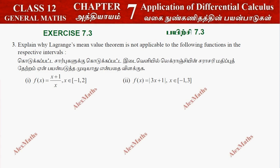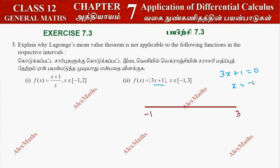Now for the second part: f of x is a modulus function. We take a number line from minus 1 to 3. Inside the modulus we have 3x plus 1. Setting 3x plus 1 equal to 0 gives x equal to minus 1 by 3. So x equals minus 1 by 3 is the critical point on the number line.